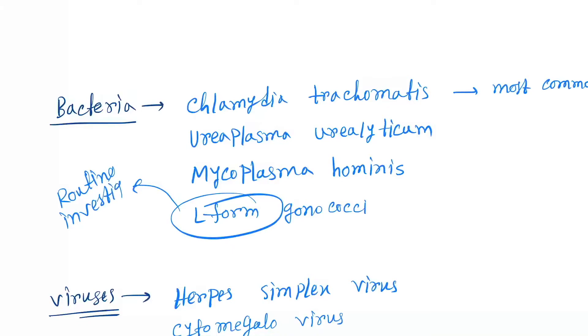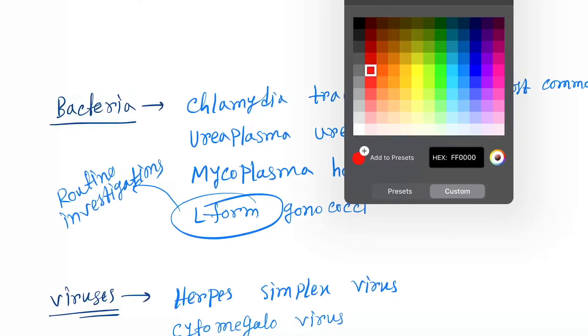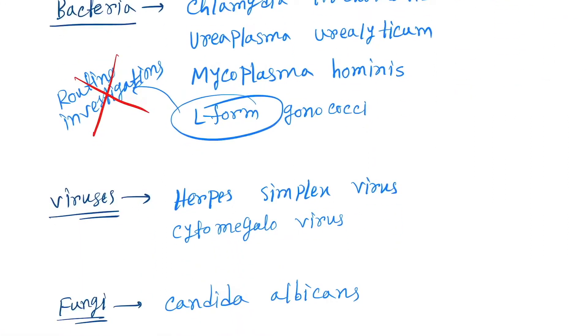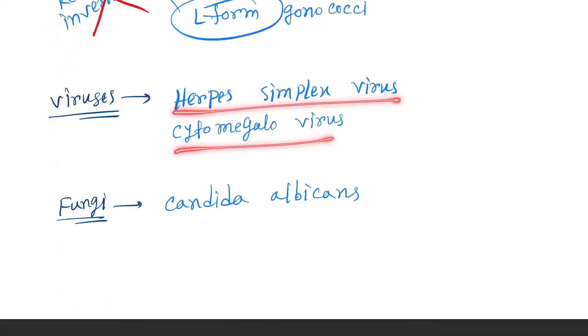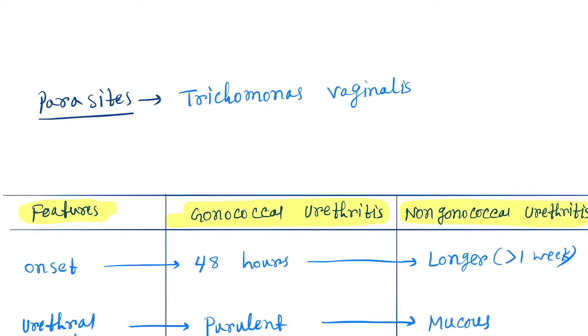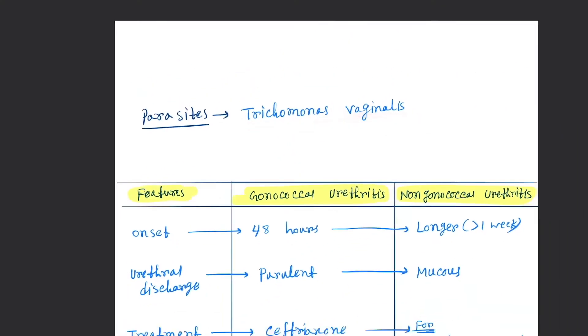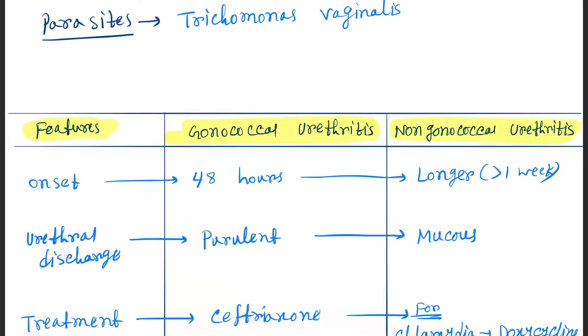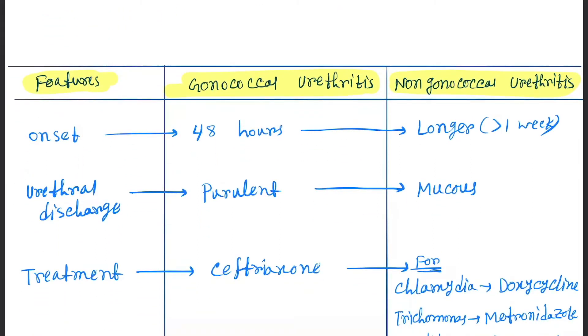Now viruses: Herpes simplex virus and cytomegalovirus. Fungi: Candida albicans. Parasites: Trichomonas vaginalis. Now see the difference between gonococcal and non-gonococcal urethritis. Onset: